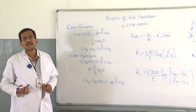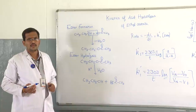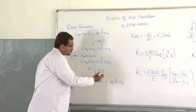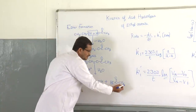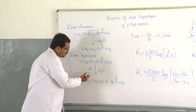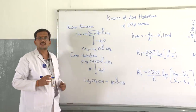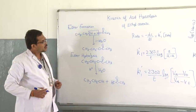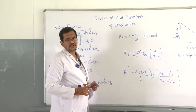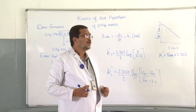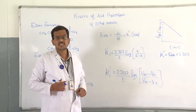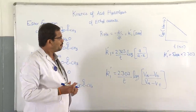There are two acids involved, so don't get confused. One is the product — acetic acid — and the other is the mineral acid, which is used as a catalyst. Now let's look at the rate equation.